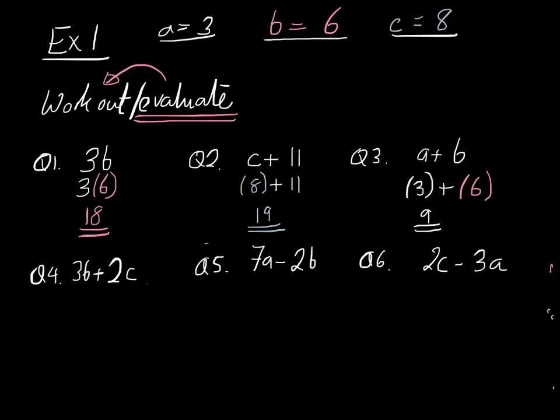Now let's do the next three examples. 3b plus 2c. Now this is where the brackets become important. 3b means 3 lots of b and 2c means 2 lots of c. So we must substitute using brackets to remind us to multiply. 3 and then we're going to put brackets 6, plus 2, and we're going to put brackets 8. Now 3 times 6 is actually equal to 18. And 2 times 8 is actually equal to 16. And 18 plus 16 is equal to 34, and we are done.